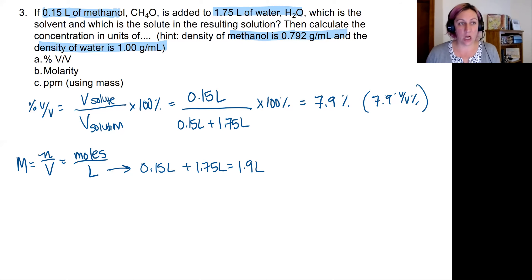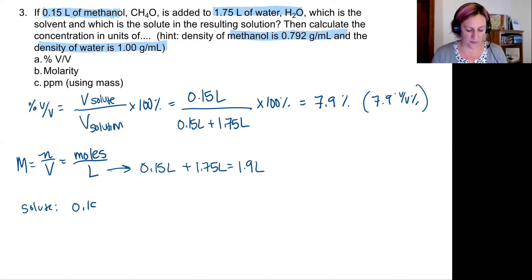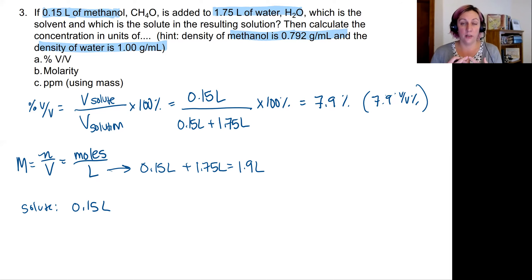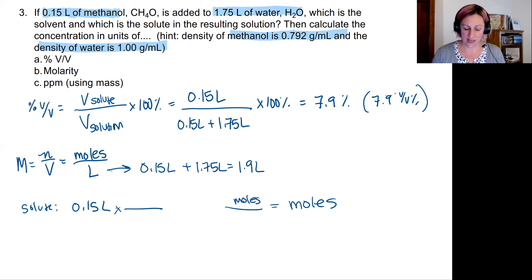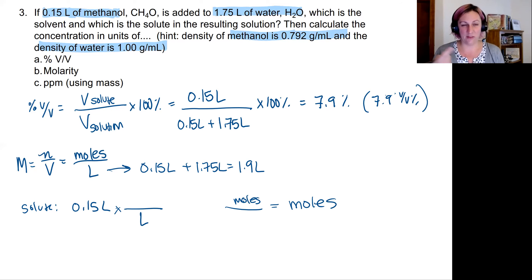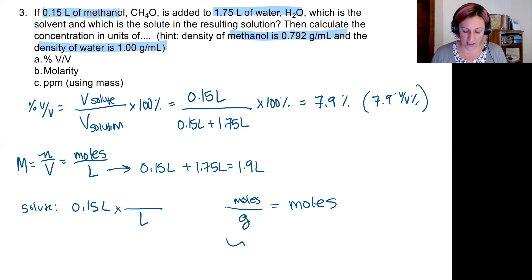I need to get to moles, so I'll start with the solute information I have. For my solute, I have a volume of 0.15 liters. I'll use density to work backwards. Using dimensional analysis: I want moles on top and liters on the bottom. I don't have concentration information since that's what I'm solving for, so I'll use molar mass — which always has moles in it — as a conversion factor.